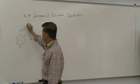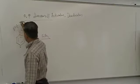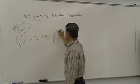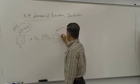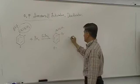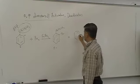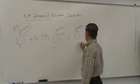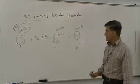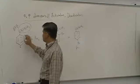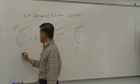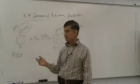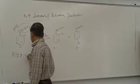The alkyl group attached to the benzene ring directs to ortho and para positions. So the products of propylbenzene bromination are: one product with Br at ortho (with CH2CH2CH3 present), and the other at para. These are the two major products — there will be almost no meta product. This tells us that alkyl groups — methyl, ethyl, propyl, butyl, pentyl — are all ortho-para directors.